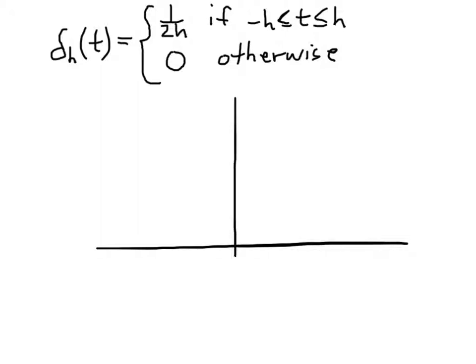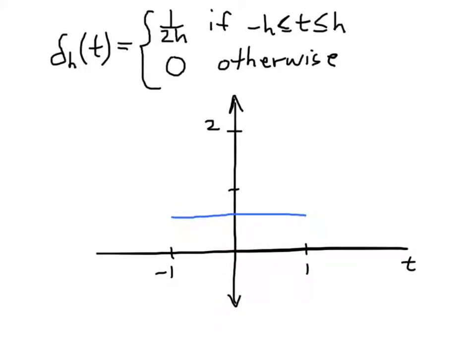So let's take a look at what the graphs of these functions look like for several values of h. Let's start off supposing that h equals 1. So if h is 1, then we're interested in the interval on the t-axis between negative 1 and 1. And between those two values, our value of the function is 1 over 2 times 1, or 1 half. So the graph would look like this. It's 1 half if we're between negative 1 and 1. Let's move that down a little to where it's supposed to be. Well, anyway, that blue line should be at 1 half, even though it doesn't look quite like it is.